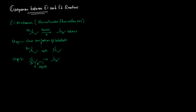The first step is slow and is the rate-determining step. The second step is fast. As only one molecule is involved in the slow step, the kinetics is unimolecular: the rate of reaction is equal to the concentration of substrate. That's why we call it unimolecular, because the rate of reaction only depends upon the concentration of substrate.